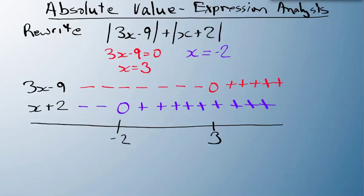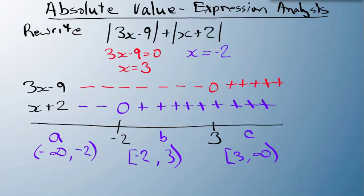We have three sections. Section A goes from negative infinity to minus 2. Section B goes from minus 2 to 3. Section C goes from 3 to positive infinity. We'll have to do each section separately.